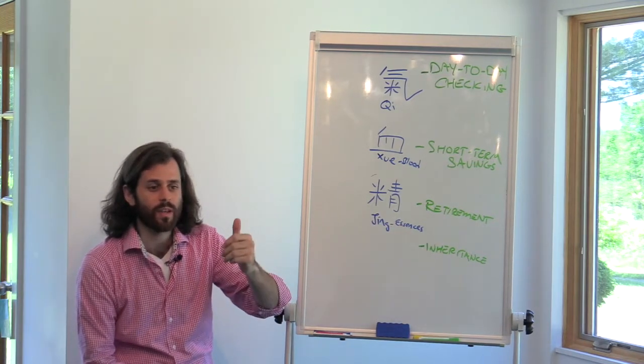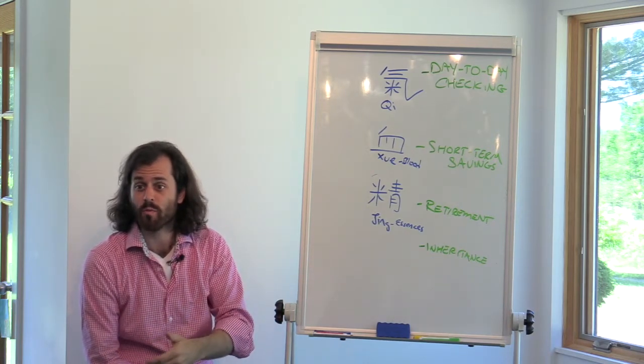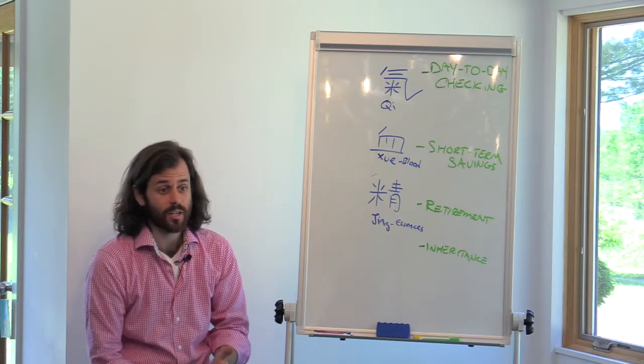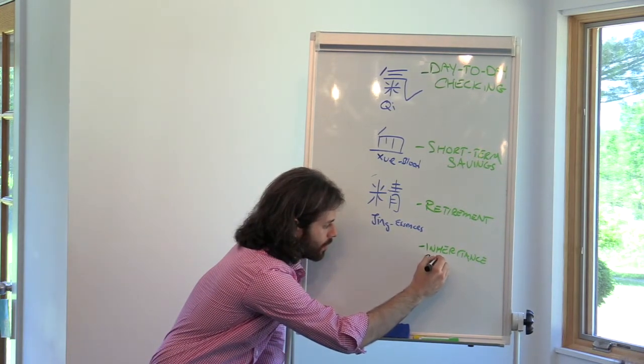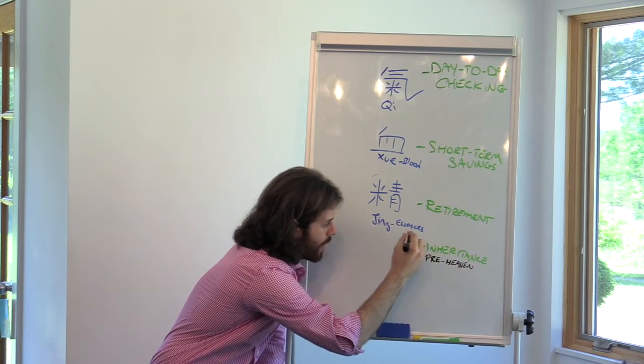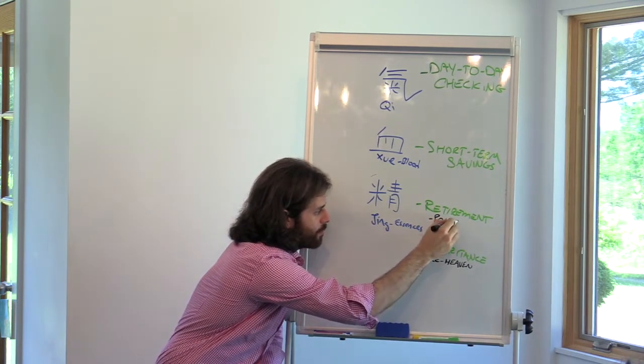If you had a big, fat inheritance, they're going to give you a billion dollars. So that means someone had a lot of money at the end of their life to give you a billion dollars. What's likely going to happen at the end of your life? You're going to still have a lot of money. That's your inheritance. So we're going to call this pre-heaven essences. And your retirement is the stuff that you save for yourself, post-heaven.